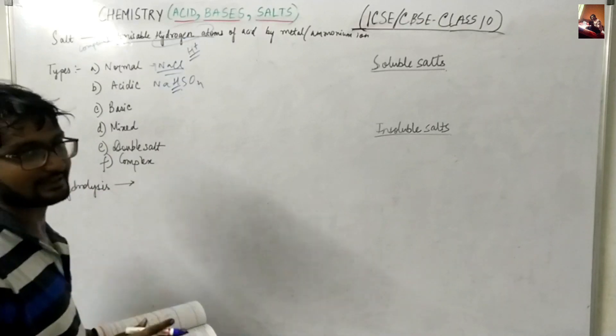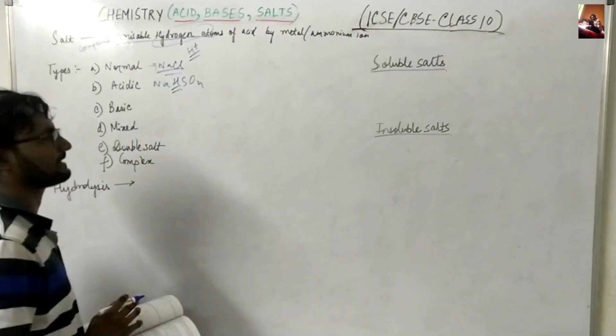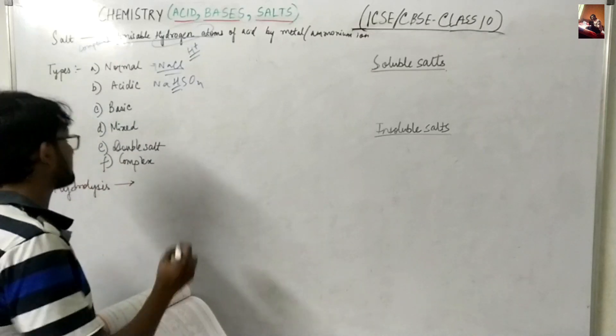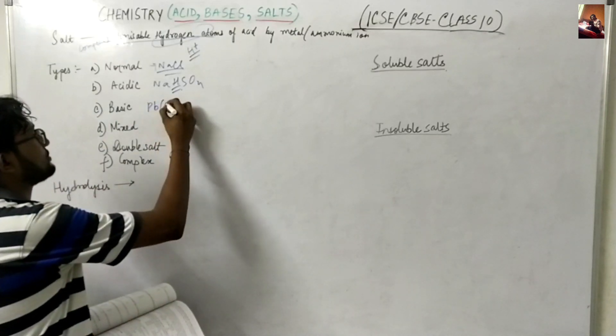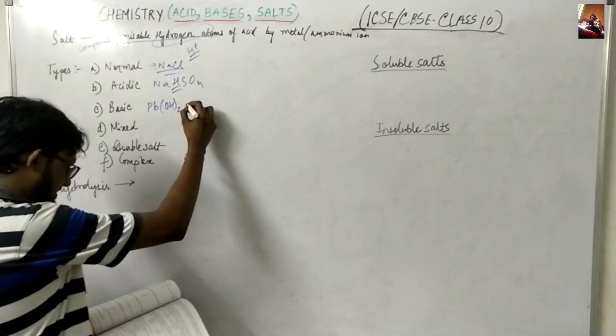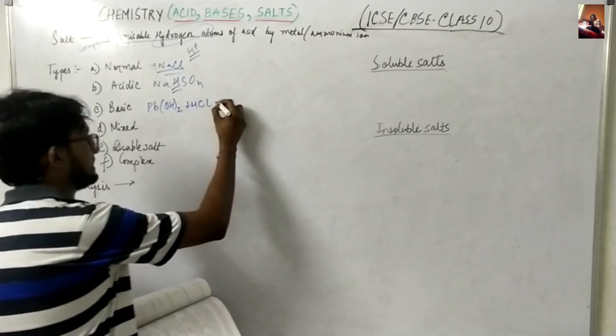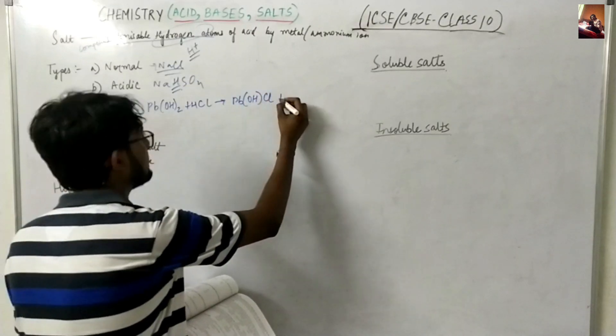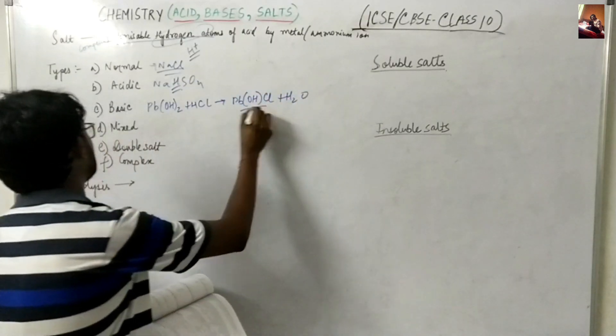Basic is like when it formed like hydroxyl. In case of base, basic salt is like hydroxyl partial replacement of hydroxyl ions. So for example like Pb(OH)2 this is a base plus HCl like partial you can say PbOHCl plus H2O. This is in case of basic.